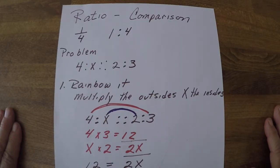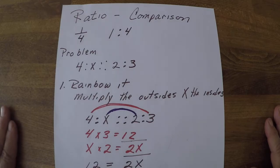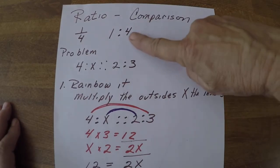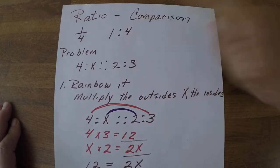I'd like to talk to you for a minute about ratios. A few of you said you were struggling with those here in our drug calculations. A ratio is simply a comparison — just like the fraction 1 to 4, it's a comparison of 1 to 4.